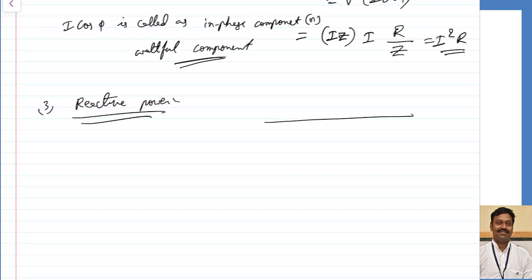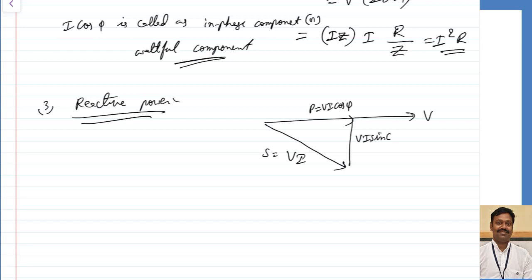Drawing the power triangle: this is my active power V·I·cos φ; this is V·I, the apparent power. To complete the triangle, we need one more side, which is V·I·sin φ. This side is called the reactive power Q.